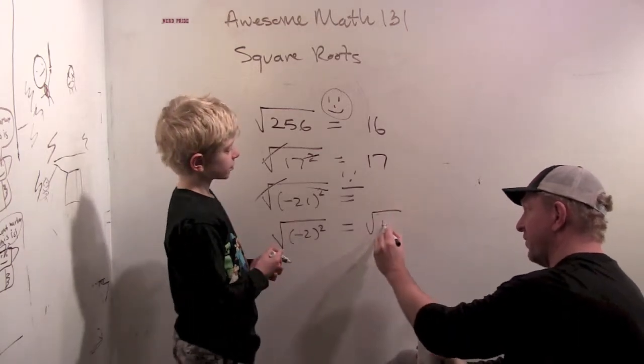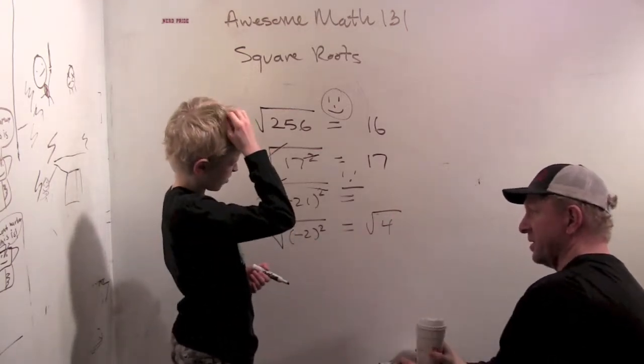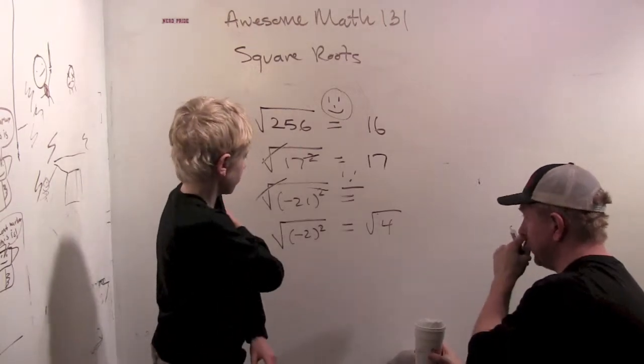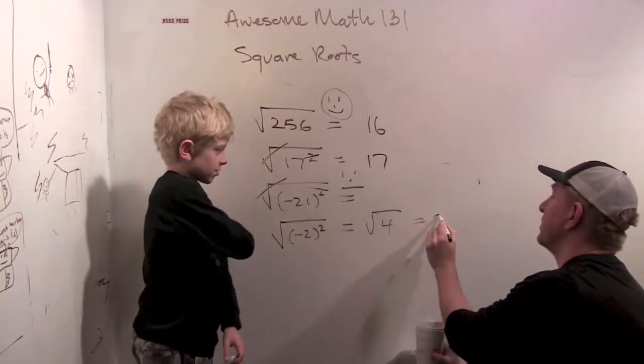This is the same thing as the square root of 4 because minus 2 squared is 4. And then the square root of that is 2.